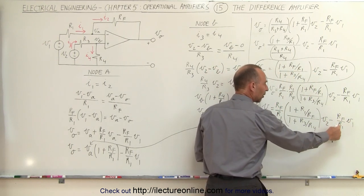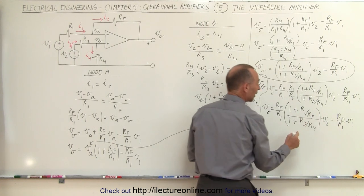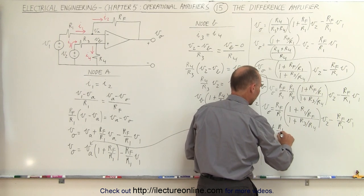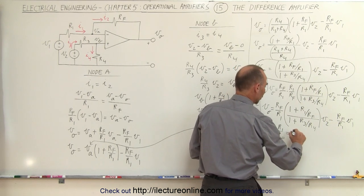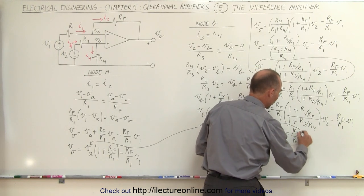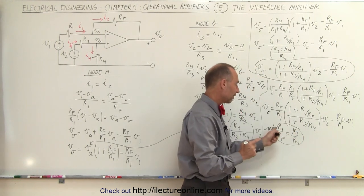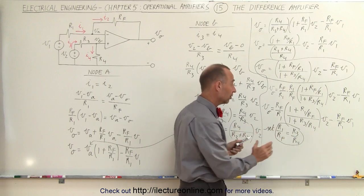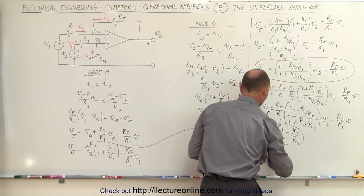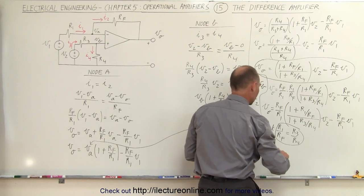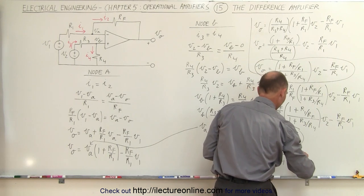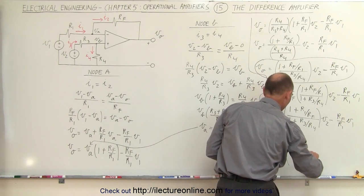Notice we have RF over R1 in front of both terms. Now if we set R1 over RF equal to R3 over R4 — that's a special condition — then the fraction (1 plus R1 over RF) divided by (1 plus R3 over R4) goes equal to 1, and we end up with VO equals RF divided by R1 times (V2 minus V1).